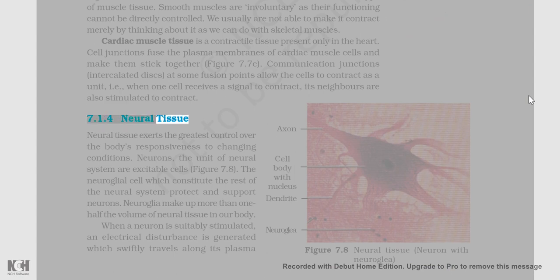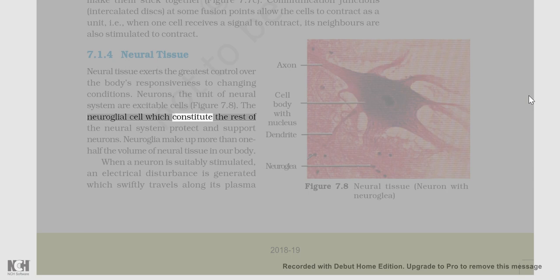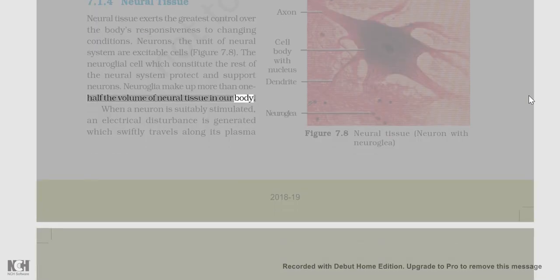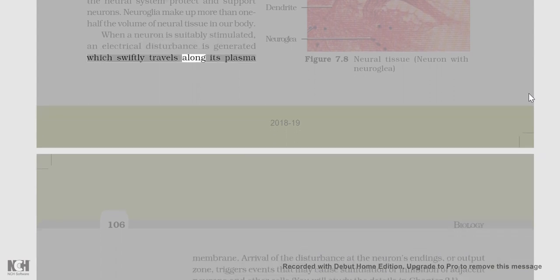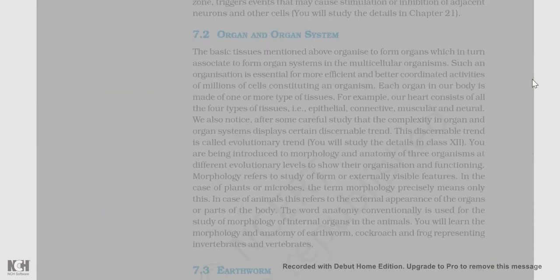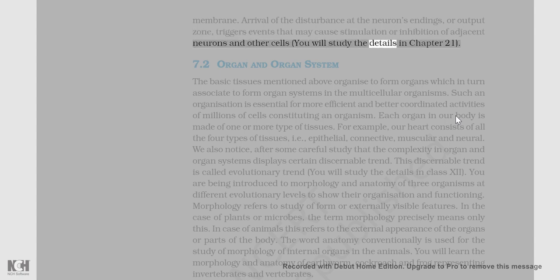Neural tissue exerts the greatest control over the body's responsiveness to changing conditions. Neurons, the unit of neural system, are excitable cells (figure 7.8). The neuroglial cells, which constitute the rest of the neural system, protect and support neurons. Neuroglia make up more than one-half the volume of neural tissue in our body. When a neuron is suitably stimulated, an electrical disturbance is generated which swiftly travels along its plasma membrane. Arrival of the disturbance at the neuron's endings or output zone triggers events that may cause stimulation or inhibition of adjacent neurons and other cells.